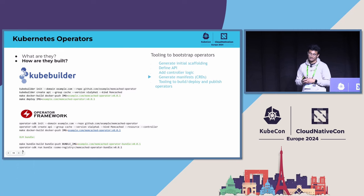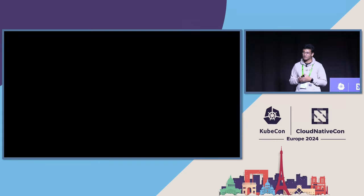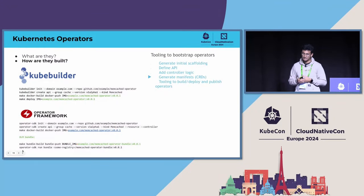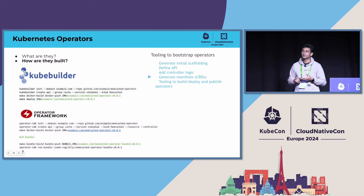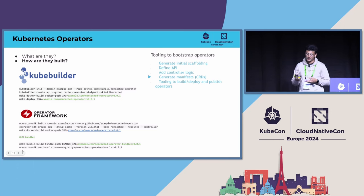How are operators built? Using common tools like KubeBuilder and the Operator Framework, with just a handful of commands you can easily build operators. These tools help generate the initial scaffolding. You can define an API and it automatically generates all the manifests required to deploy in Kubernetes. For OpenShift, there's an Operator Lifecycle Manager, and using the Operator Framework you can also generate all manifests required to deploy them in OpenShift.